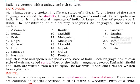Each language has its own style of writing called script. Most of the Indian languages, except Kashmiri, Sindhi and Urdu, are written from left to right. Kashmiri, Sindhi and Urdu are written from right to left.